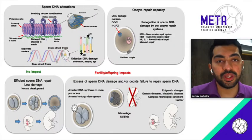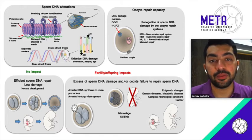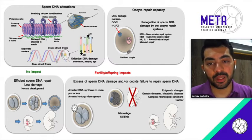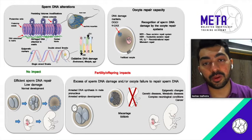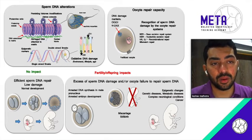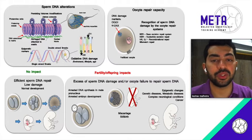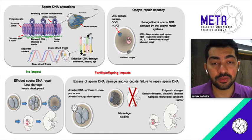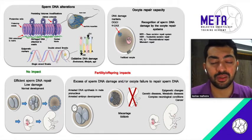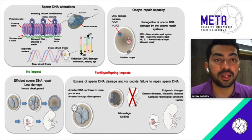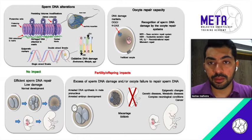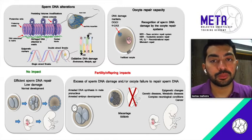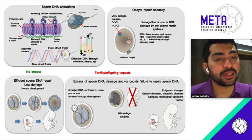The oocyte does have a certain repair capacity by which it can repair existing sperm DNA damage. For this to happen, the egg needs to be healthy and from a young patient with no abnormal parameters. As age advances, or in IVF patients where something is often compromised, these eggs don't have the same repair capacity, making them more prone to the profound effects of sperm DNA damage.